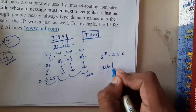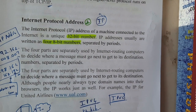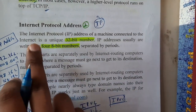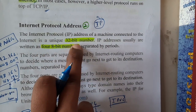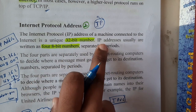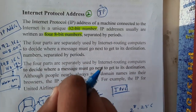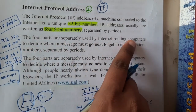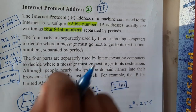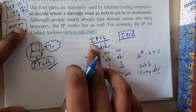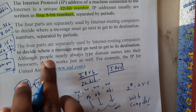This is the IP address for a particular website or computer. Now for the theoretical part: the internet protocol IP address for a particular machine connected to the internet is unique - that is a 32-bit address. IP address is usually written in 4 eight-bit format separated by dots. The four parts are used by internet routing computers to decide where a message must go to reach its destination. We will discuss IP protocol in detail in computer networking.